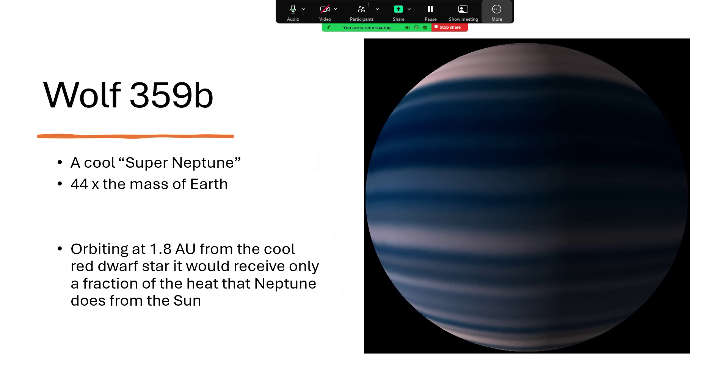And this is quite a large planet indeed. It's a super-Neptune, 44 Earth masses, and orbits not close to the star, 1.8 astronomical units. So that would, in our solar system, be beyond Mars. Quite a large planet orbiting round a very small star. And because that star is so small and has such a low power output, Wolf 359b is going to be chilly. It's going to receive a tiny fraction of the amount of heat that even Neptune does from the Sun. But I suspect we're going to find more smaller planets as our instrumentation and technology improves.